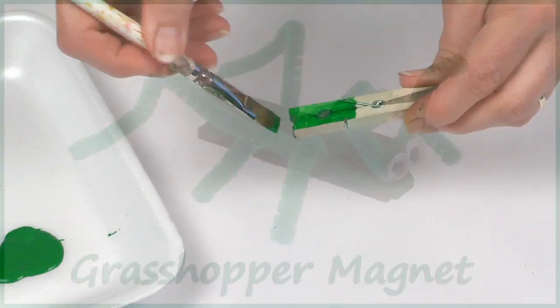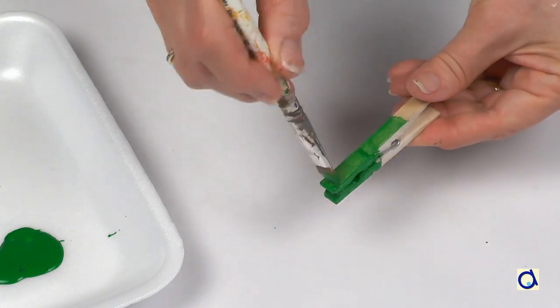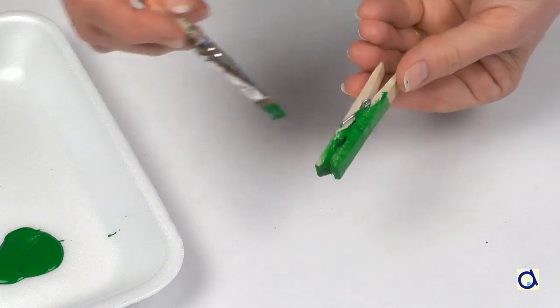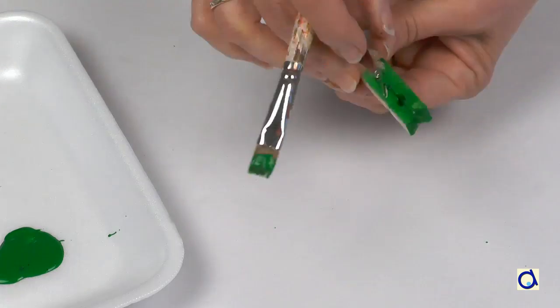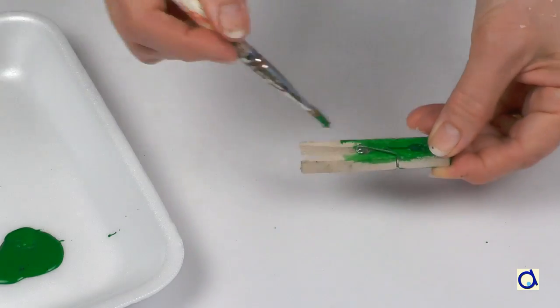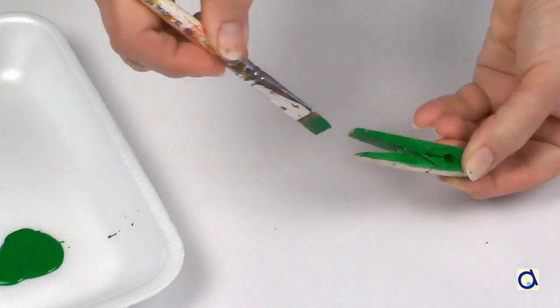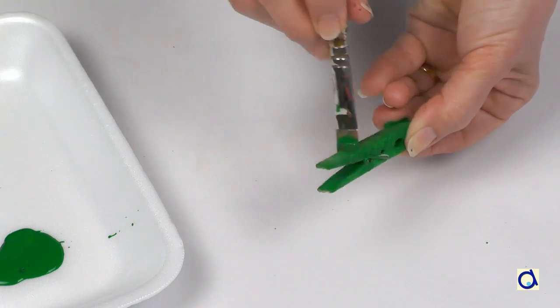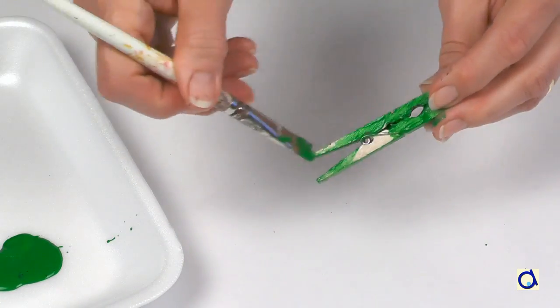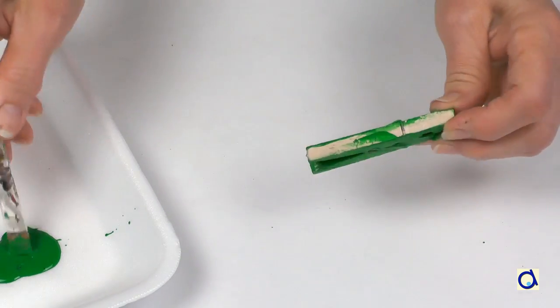Take a wooden clothespin and paint it in a color of your choice. If necessary, use several coats of paint to hide the wood of the clothespin. I chose to paint the clothespin green. When you are satisfied, let the clothespin dry.